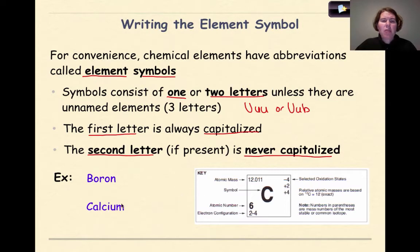So let's look at two examples. The first one being boron, which is a capital B, and calcium, which is a capital C and lowercase a.